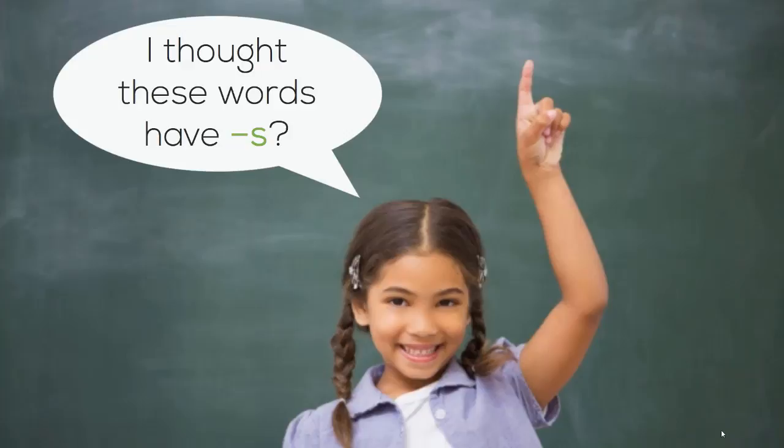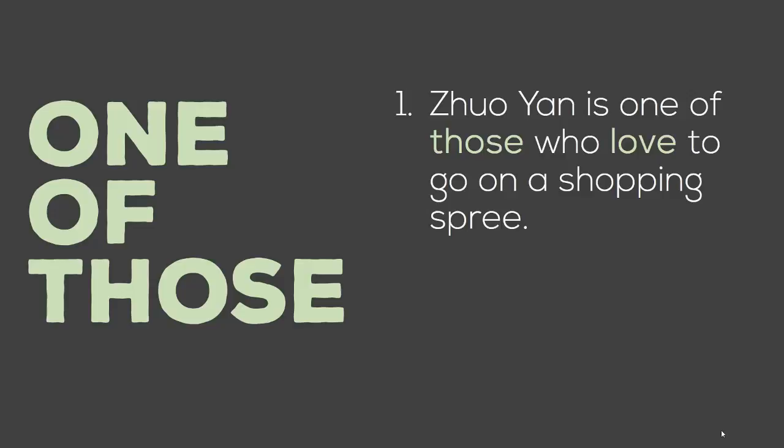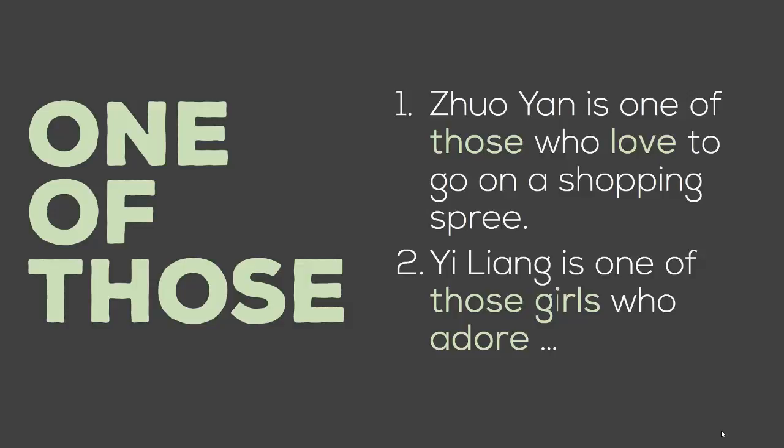Plurality — that's one of my favorites. One of those: even though you think it should all be plural, if you look at the sentence structure, it's still one. For example, she is one of those who love to go on a shopping spree. Here, love refers to those, which is plural. So: Iliang is one of those girls who adore — those girls uses the plural verb adore — Lady Gaga.